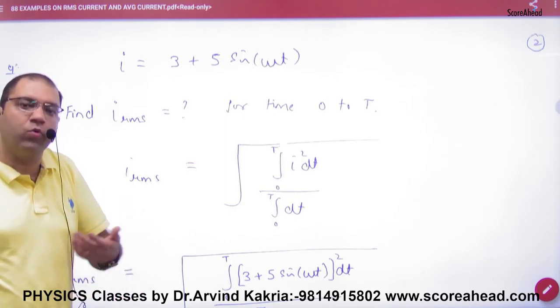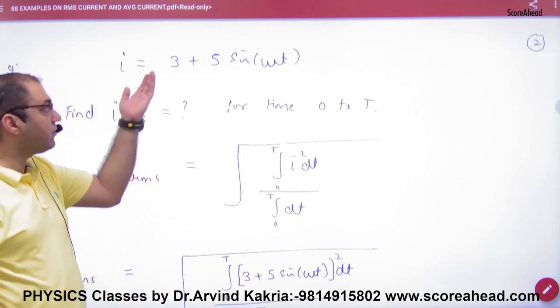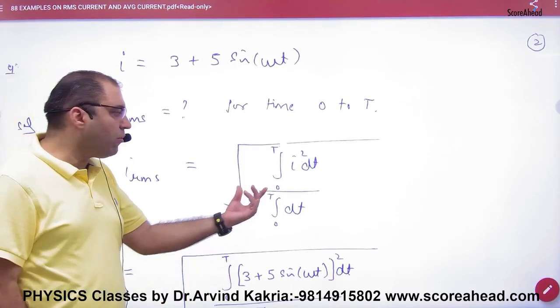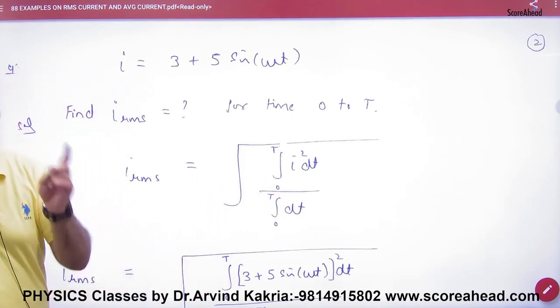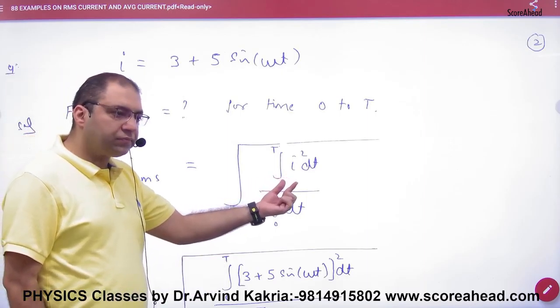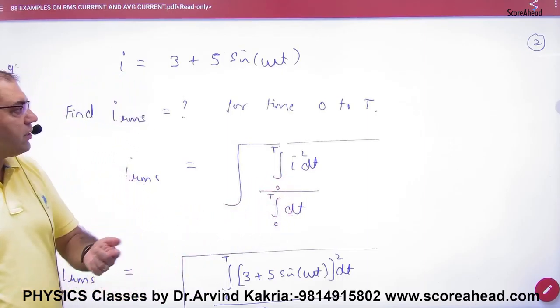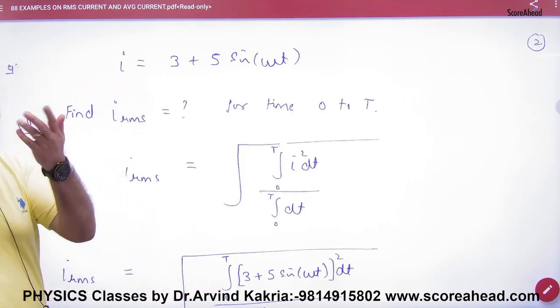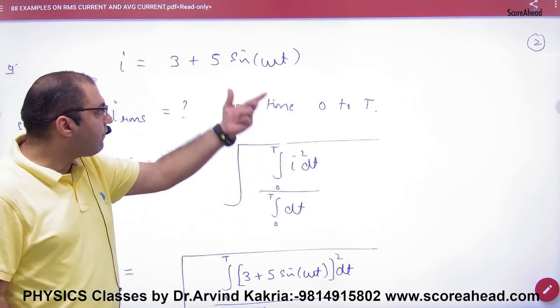What is the extra 3? What should I take? I_RMS. No shortcut, I_RMS formula. Last time under root of formula i²dt and integration of dt from zero to capital T. So the limit will be from zero to capital T. So you put this i value from above and below.